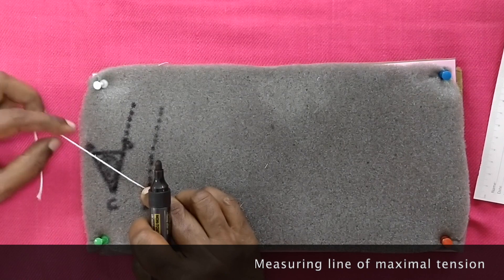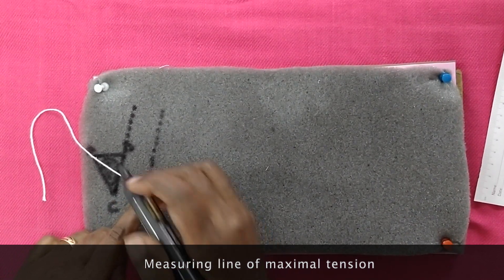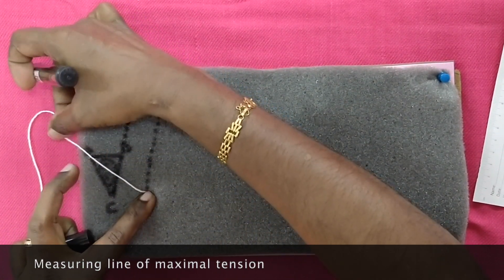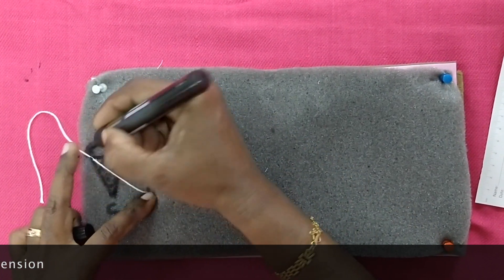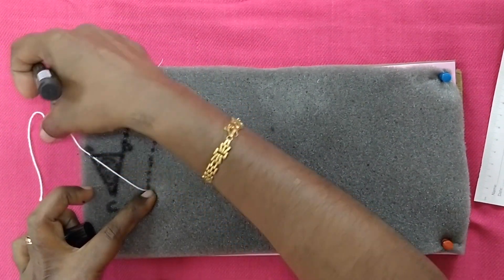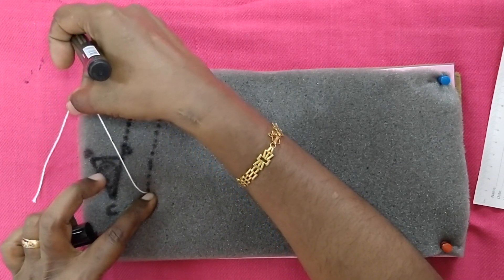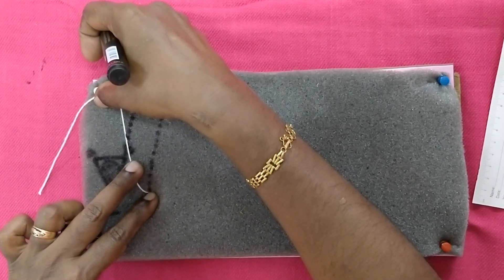Keeping the pivot point D as constant, we measure the distance D to A. This is going to be the line of greatest tension or line of maximum tension. This is marked and transposed gently to the line extended from CB.